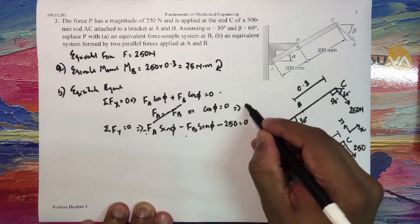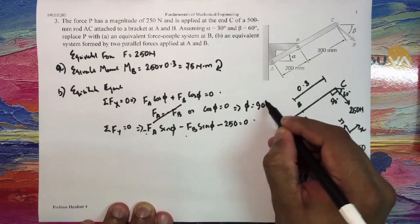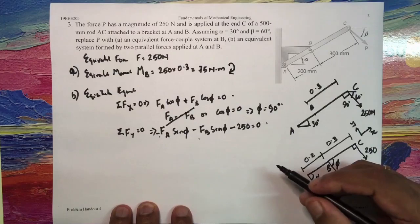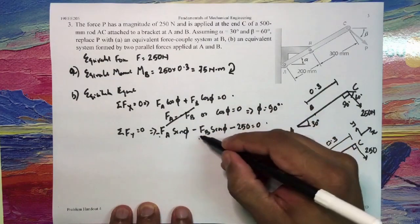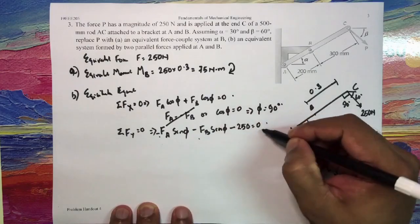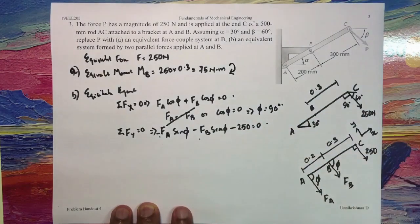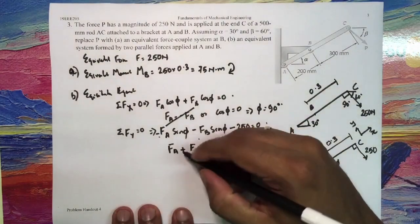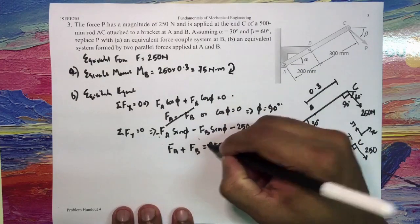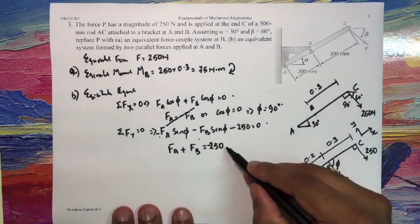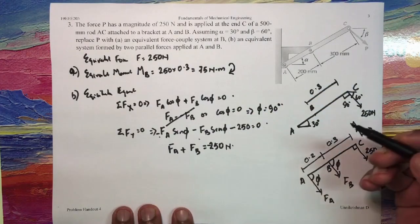So remaining is cos phi is equal to 0, which implies phi would be 90 degrees. So I have this equation coming out to be minus FA sin 90 minus FB sin 90 minus 250 is equal to 0. So you have the final equation coming out to be FA plus FB is equal to minus 250 Newtons.